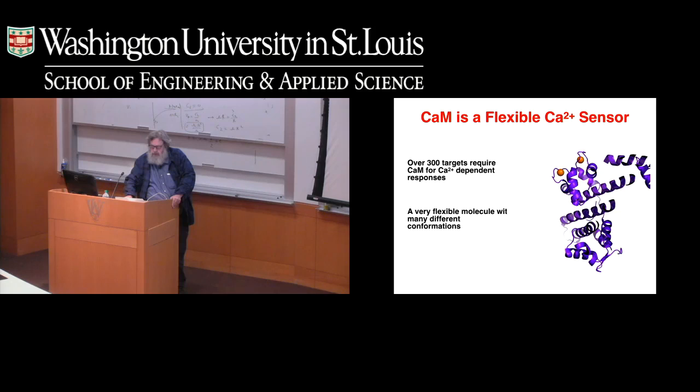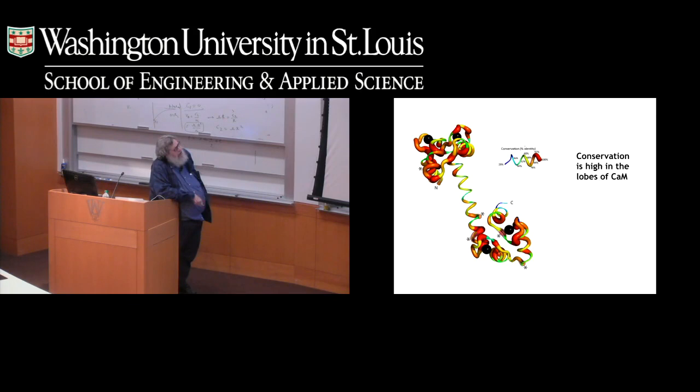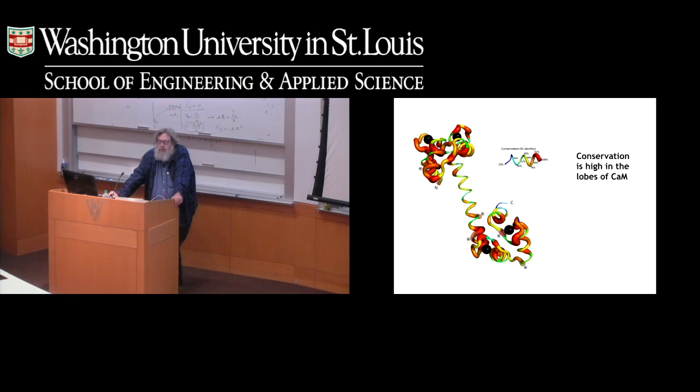There are over 300 different targets of calmodulin for calcium-regulated proteins. Crystal structures from all sorts of different target proteins show that calmodulin is really flexible and adapts to different tertiary structures when bound to different target proteins. It's also one of the most highly conserved proteins in life. The redder and whiter the residues are, the more highly conserved they are — particularly conserved in the calcium-coordinating and binding sites. Essentially the entire animal kingdom has only one sequence.